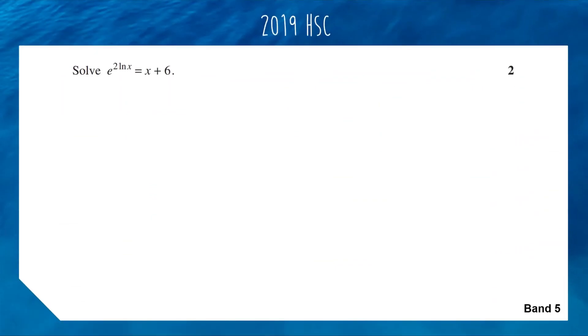Almost done now. We are solving a band 5 equation from the 2019 HSC, an exponential logarithmic equation. Very scary. We've got e to the power of 2 ln x equals x plus 6. Solve for x.